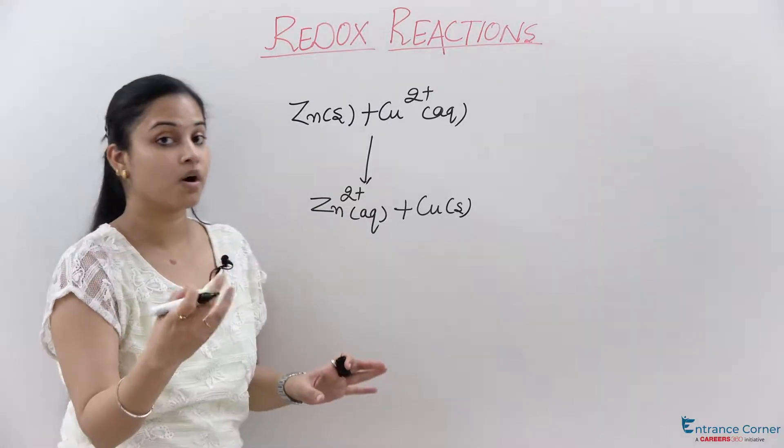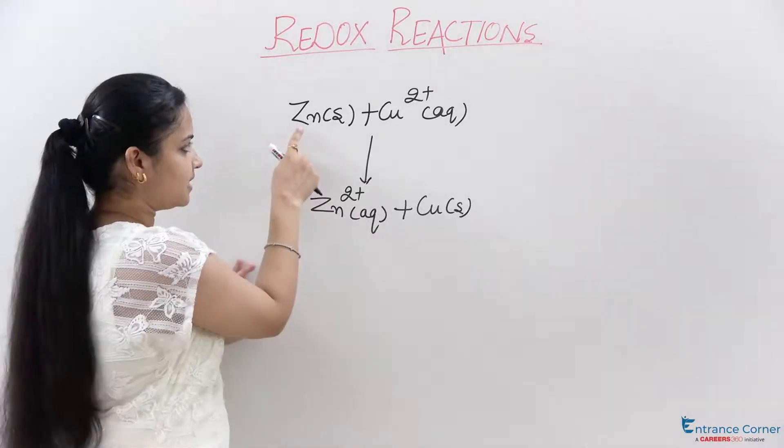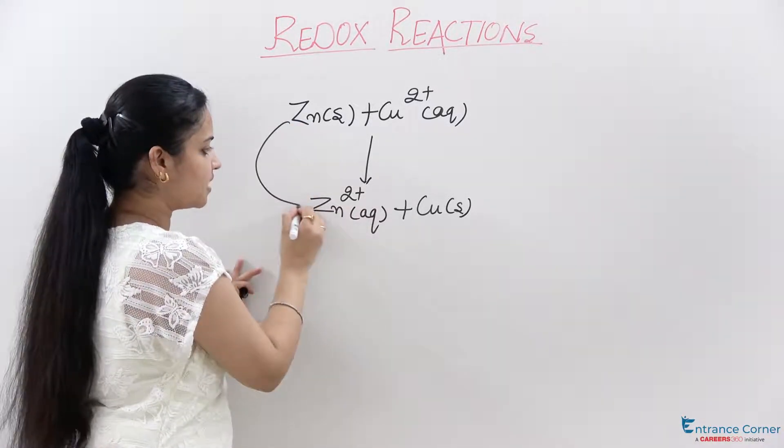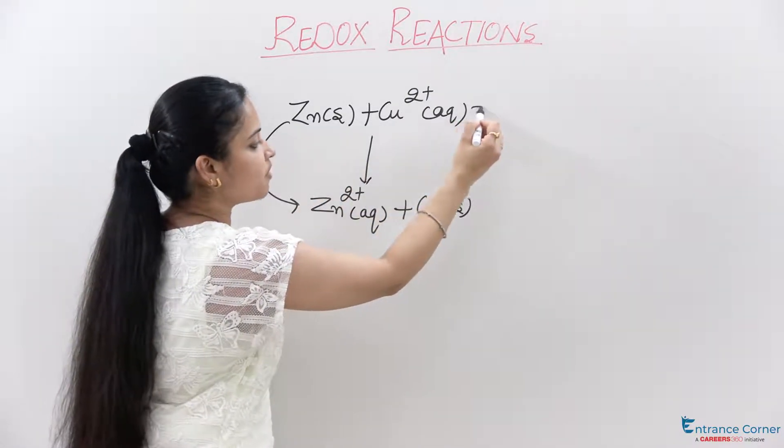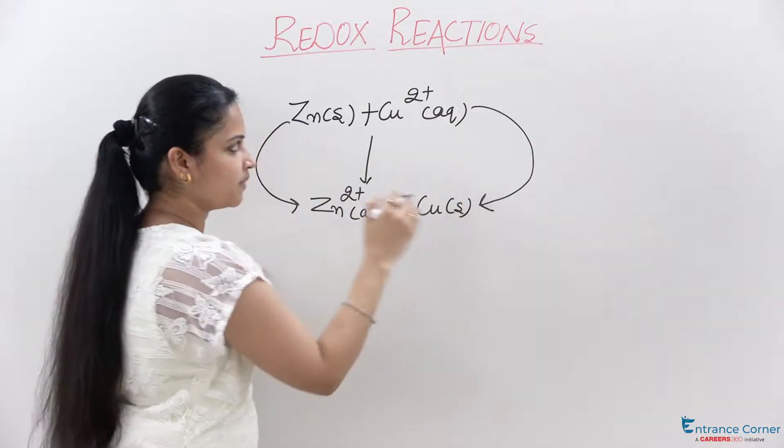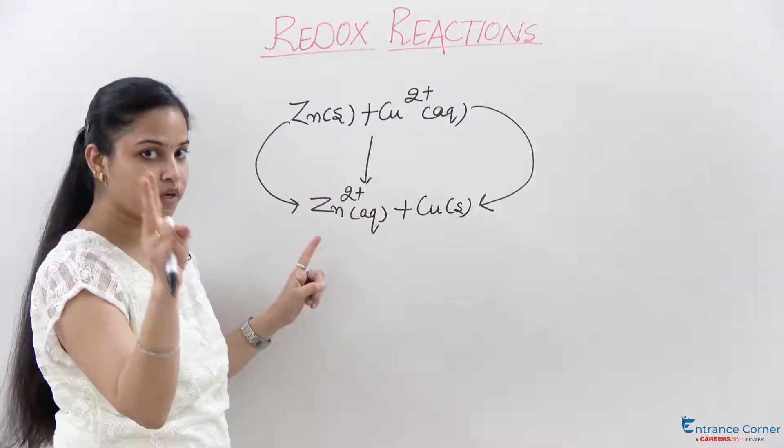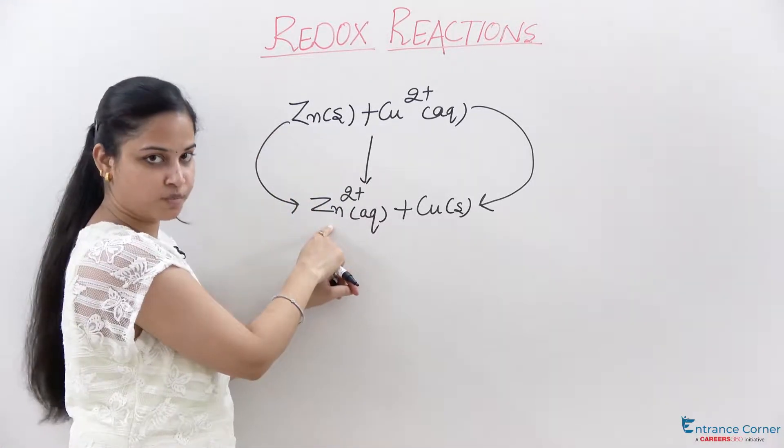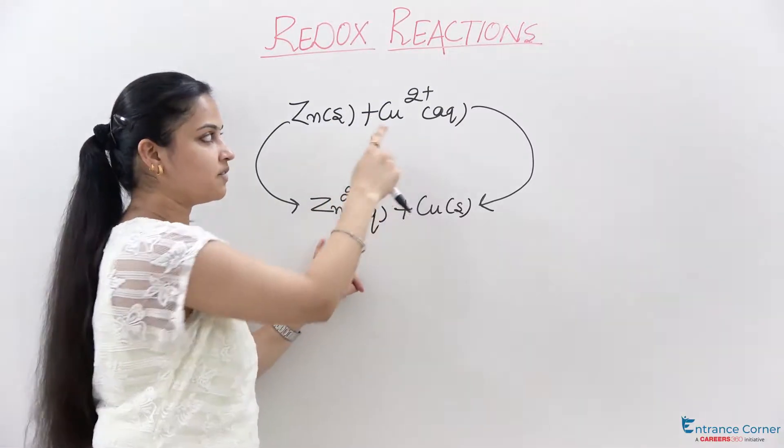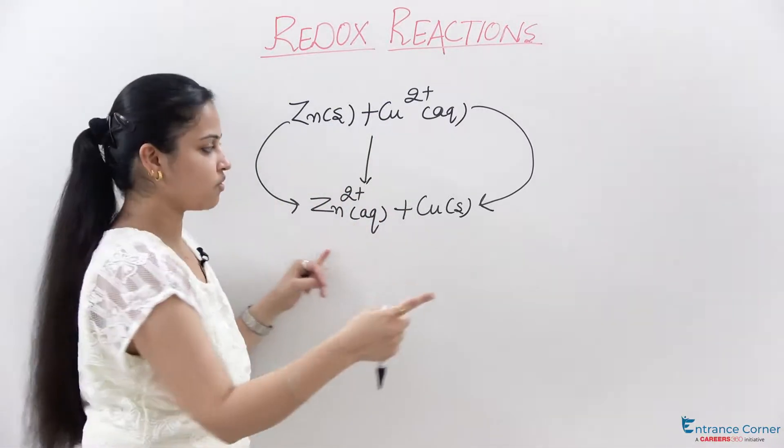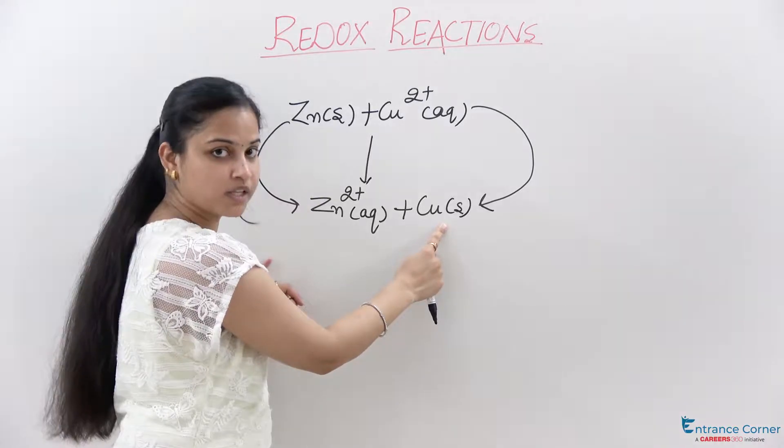So over here, what you are observing is that Zn has changed into Zn2+ and Cu2+ has changed into Cu. That means zinc has lost two electrons to form Zn2+, and Cu2+ has gained two electrons and has formed Cu in solid state.